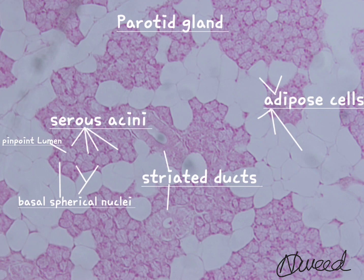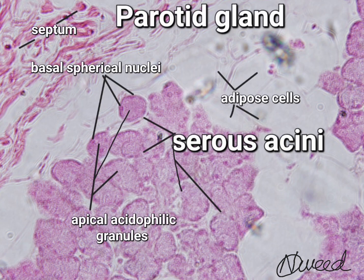The serous cells of the acini are generally pyramidal in shape, with a broad base facing the basal lamina and a relatively narrow apical surface facing the lumen of the acinus. Each cell contains a spherical nucleus located in the basal part of the cell. The apical region of serous cells contains numerous secretory granules called zymogen granules.